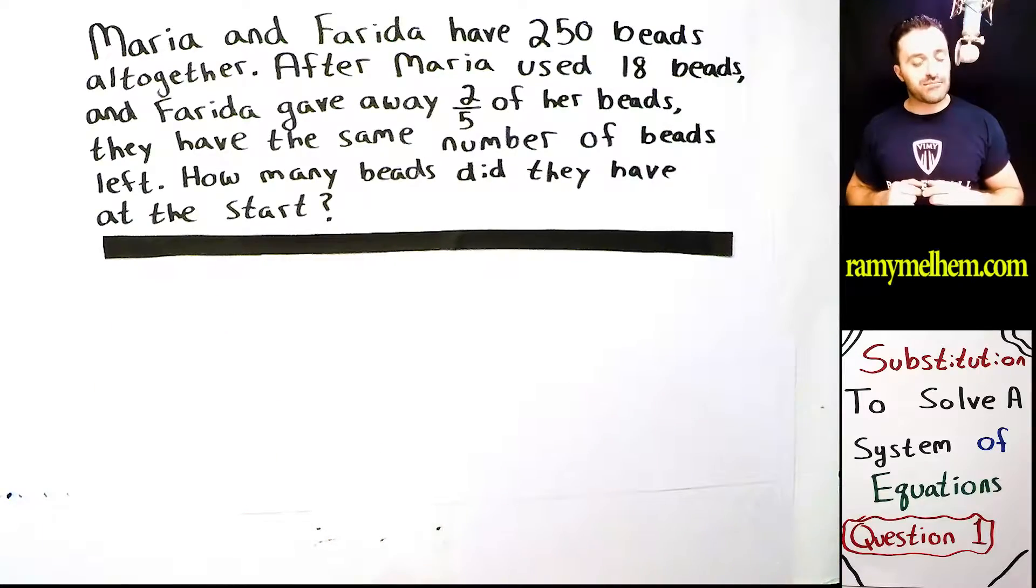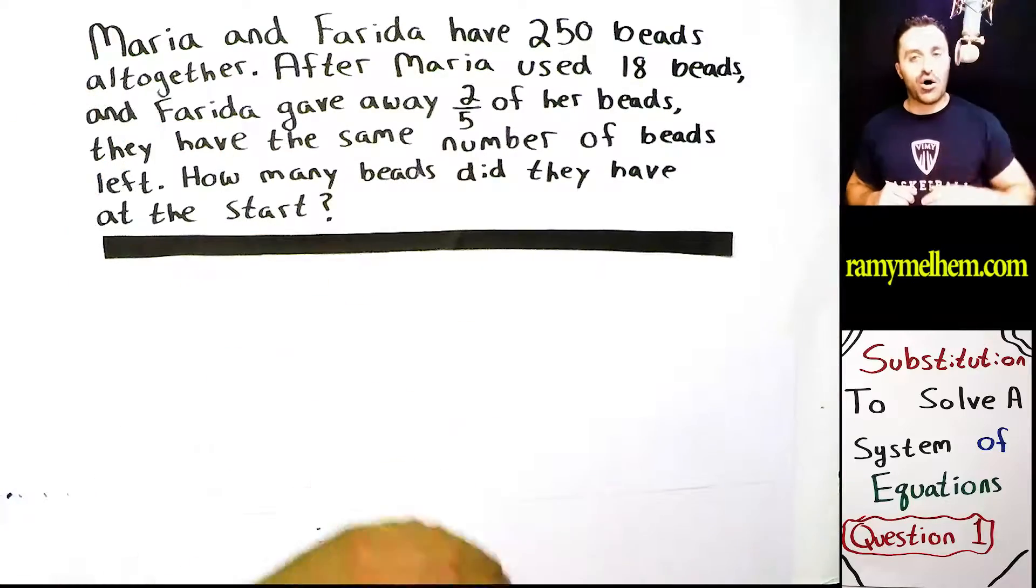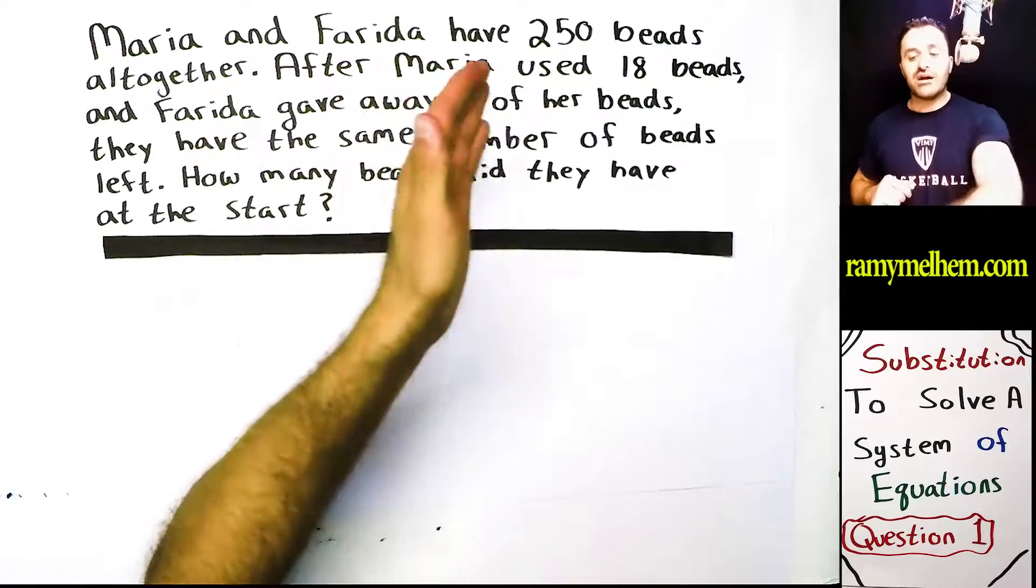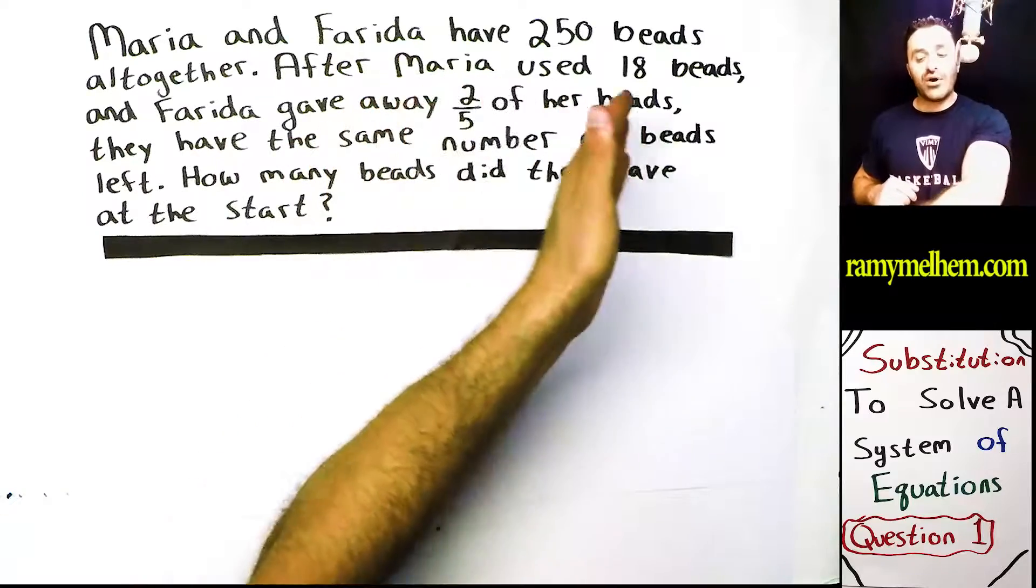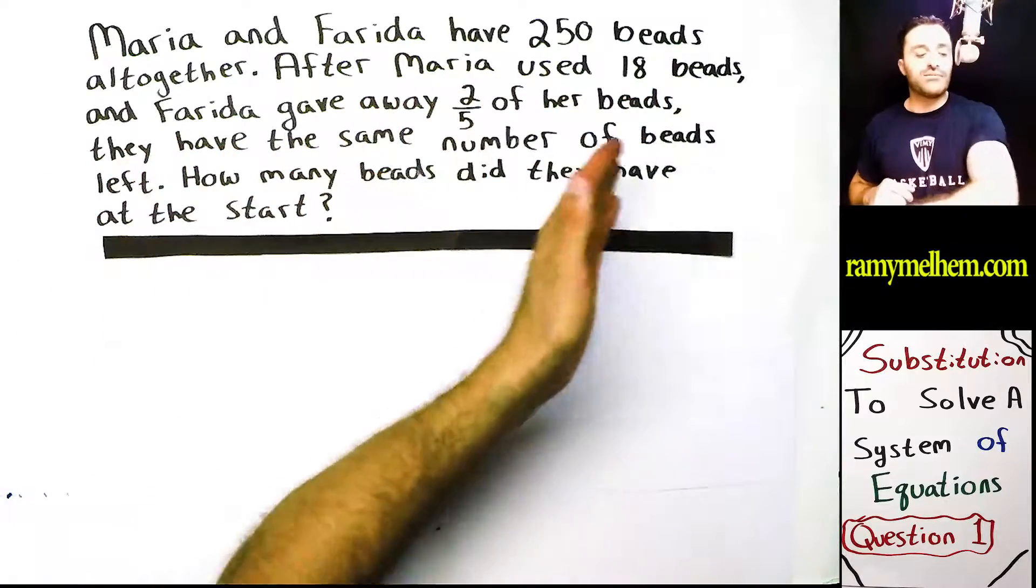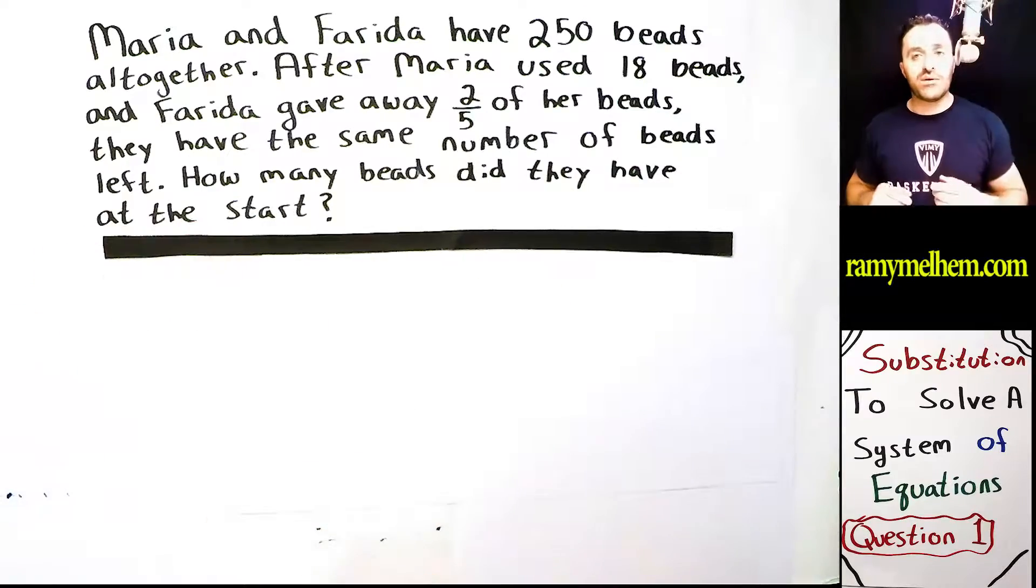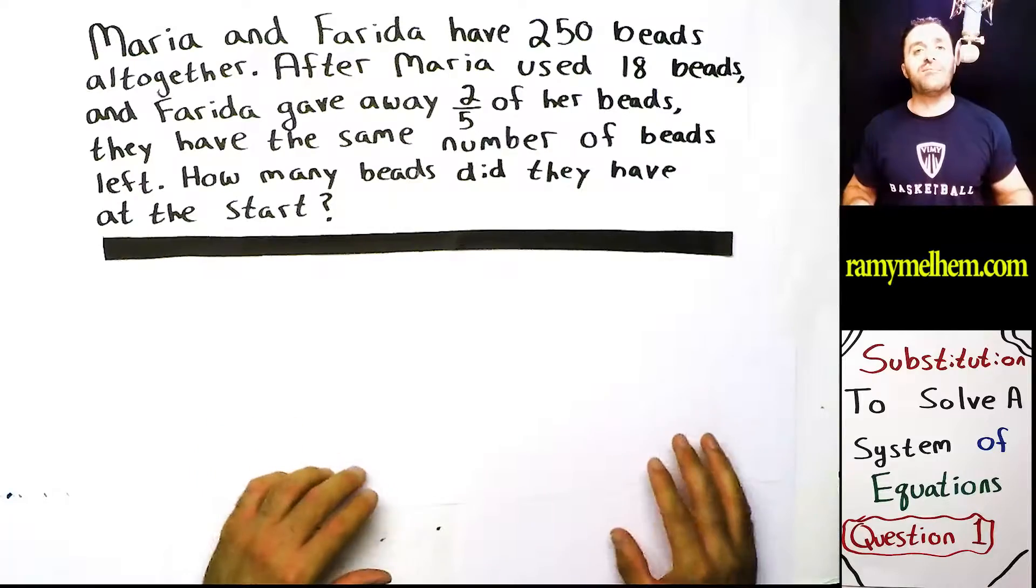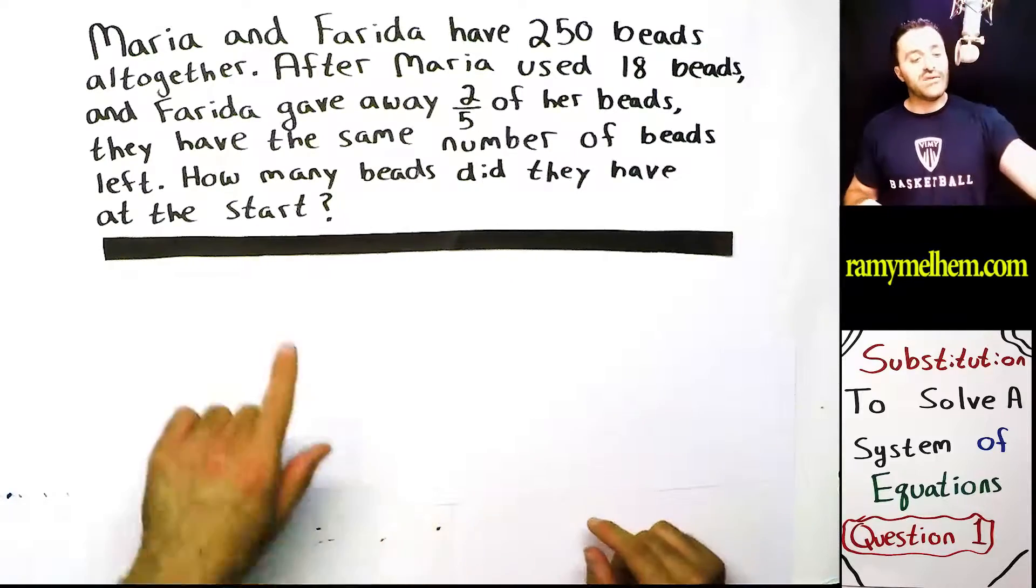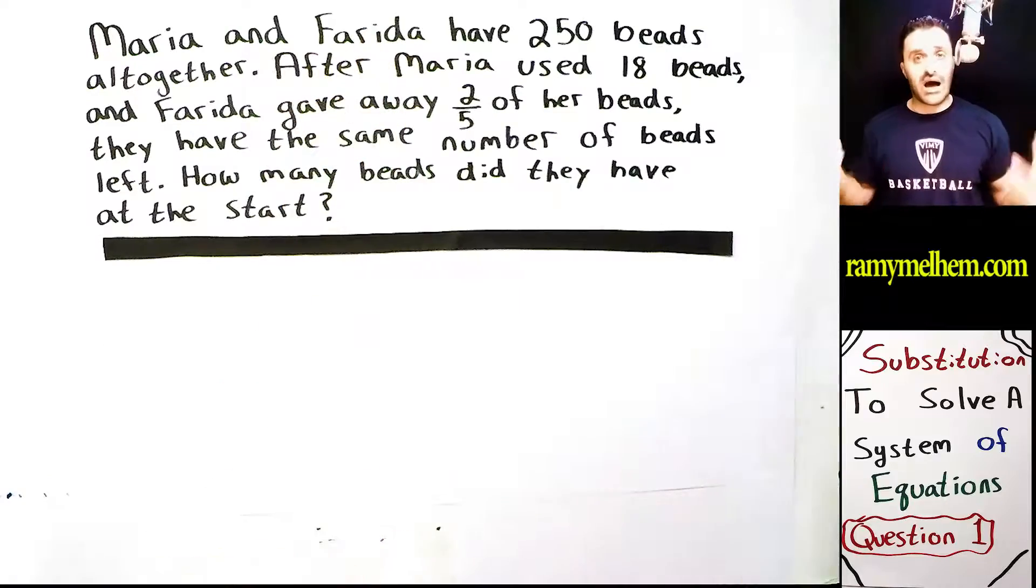So let's go ahead and read this question. It says Maria and Farida have 250 beads all together. After Maria used 18 beads and Farida gave away 2 fifths of her beads, they now have the same number of beads left over. How many beads did they start out with? So it looks like we have some unknown bits of information, particularly the number of beads Maria has and the number of beads Farida has. It's unknown.